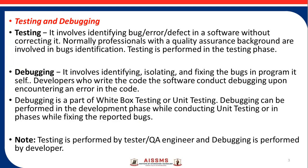Debugging involves identifying, isolating, and fixing the bugs in the program itself. Developers who write the code conduct debugging upon encountering an error in the code. Debugging is a part of white box testing or unit testing, and can be performed in the development phase while conducting unit testing or when fixing reported bugs. Testing is performed by testers — QA engineers — while debugging is performed by developers.